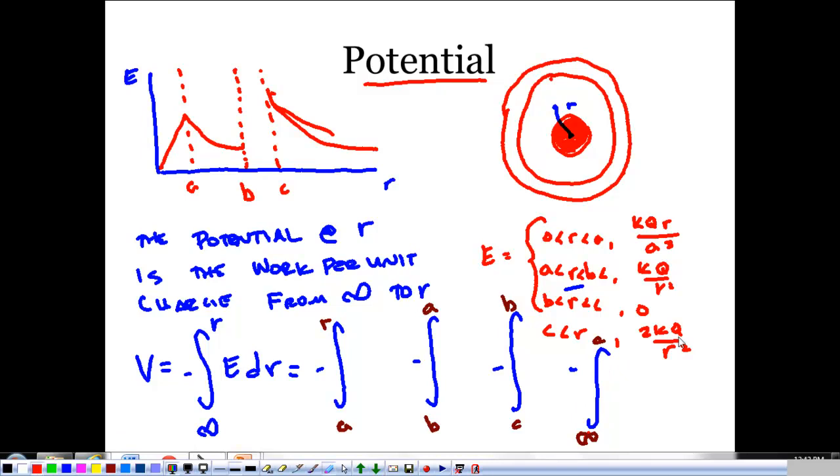Now, what's notable is I'm going to have to add up the work I do the entire way. So, from infinity to C, this is my function of the electric field, 2KQ over R² dr. I can take that integral, no big deal. From B to C, we said the electric field was zero. That's not going to add any more to my voltage, it's just going to let it be the same. Okay, and then from B to A, we have KQ over R² dr, and then from A to R, we have KQR over A³ dr.